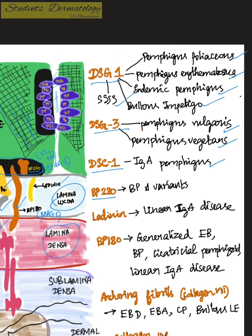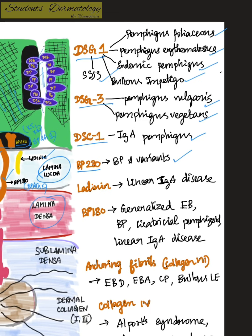Auto-antibodies against BP230 antigen can cause bullous pemphigoid and its variants. BP180 can cause generalized epidermolysis bullosa and bullous pemphigoid, along with linear IgA disease and cicatricial pemphigoid. Auto-antibodies against ladinin, present in the lamina lucida, can cause linear IgA disease.